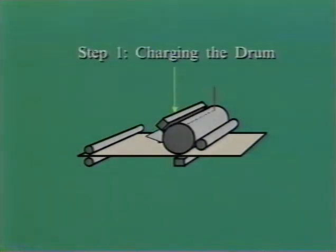Step 1, charging the drum. Here the surface of the drum is given a uniform charge. This is done by rotating the drum under a corona wire to which a high voltage is applied. As the drum rotates, the wire lays a uniform charge on the drum surface.